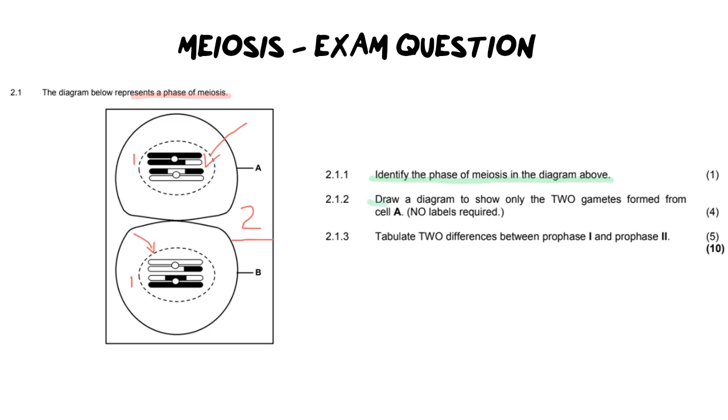Now the next question says draw a diagram and you need to be prepared to draw any phase of meiosis. It says to draw a phase where only two gametes have formed from cell A and they're being very specific about cell A, and it says no labels are required. Sometimes they will ask you for labels so you do need to be prepared to provide at least three labels for any diagram you draw.